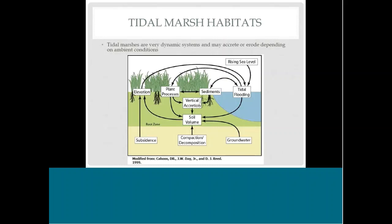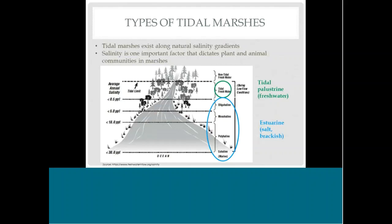Tidal marshes are very dynamic systems, and erosion at a living shoreline site is very common — that's often one of the purposes of a living shoreline. Tidal marshes occur naturally along different salinity gradients. Estuarine marshes include salt and brackish marshes, where salt marshes are the saltiest and closest to the ocean, while brackish marshes are further upstream where fresh water and salt water mix.